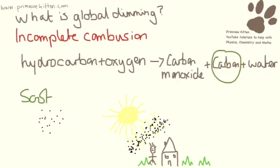It's like having a permanent smog cloud over your head. So global dimming is just when things get darker because the soot particles from incomplete combustion, the carbon particles, are up in the atmosphere blocking the sun getting through to us.